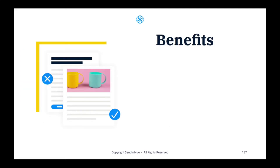So what are some of the benefits of doing an A-B test? First of all, it allows you to test a hypothesis. For example, if you think that a certain subject line might get more engagement than another, or that adding an emoji will create a higher open rate than not having an emoji, you can test that using an A-B test and verify the results.